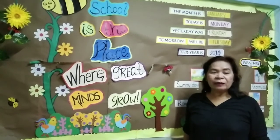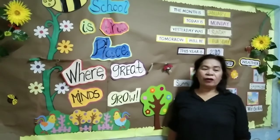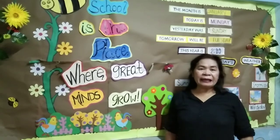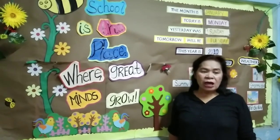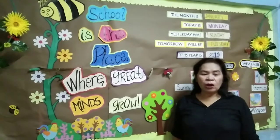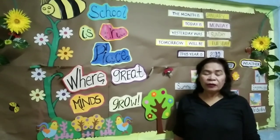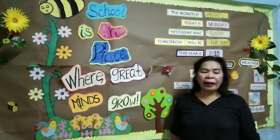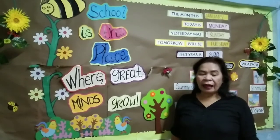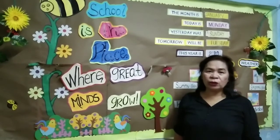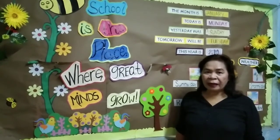So, sinasabi ko ulit ay ang ordinal number ay hindi numero na nagsasaad ng bila o ilan ang meron, kundi ito ay nagpapakita ng isang posisyon ng isang bagay.